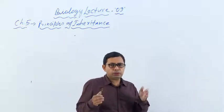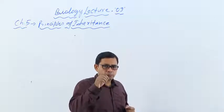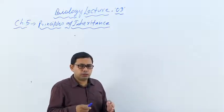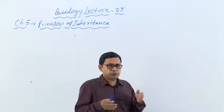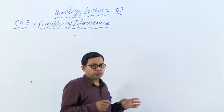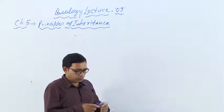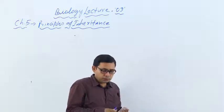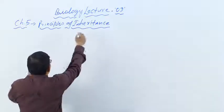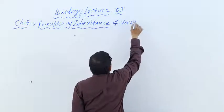Today we will study the law of independent assortment and the principle of independent assortment, which is for dihybrid cross. Today you will learn how dihybrid cross is performed, what its phenotypic ratio is, how the genotypic ratio comes, and how different combinations of gametes are formed. We will also revise the formula for making gametes.